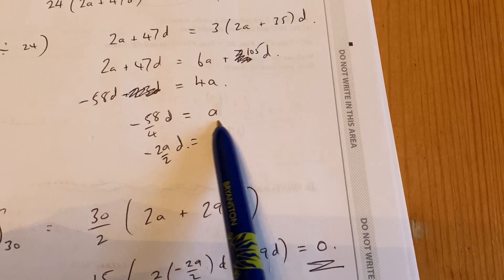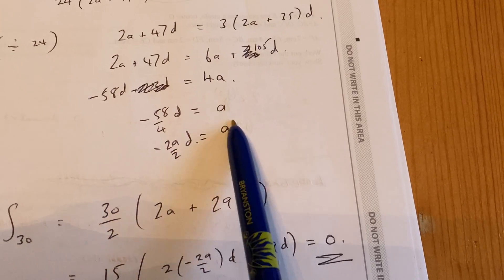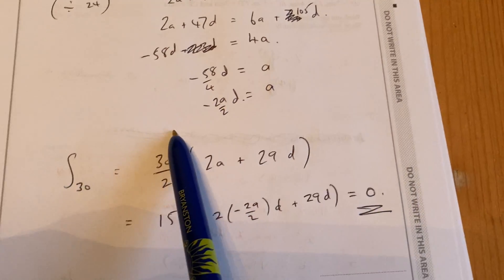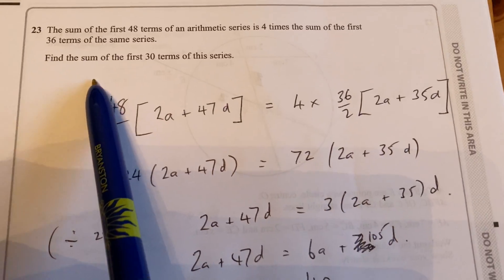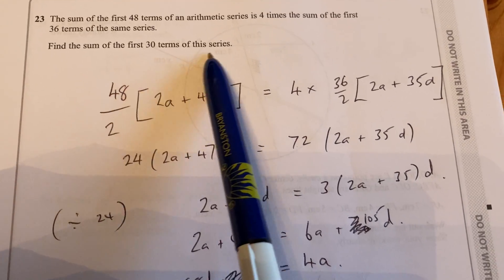Okay, we can't find out d and a because we need more information. However, the next part of the question says, find the sum of the first 30 terms.